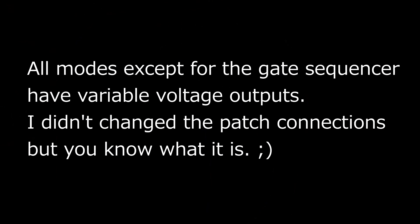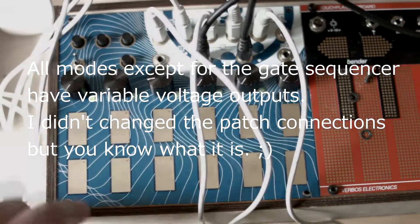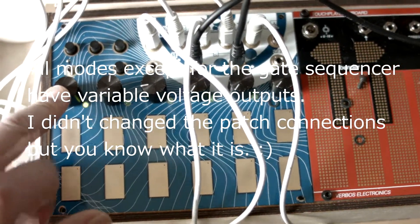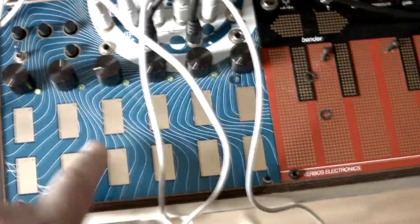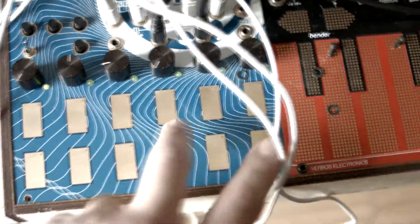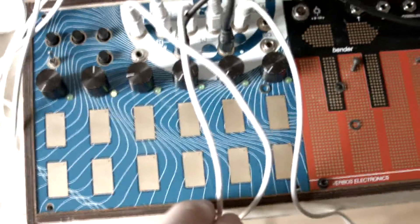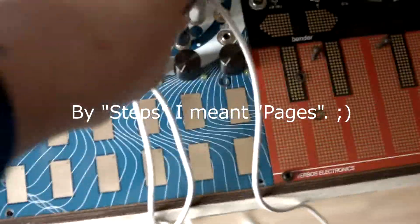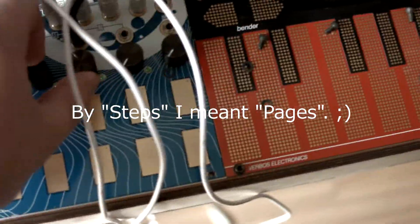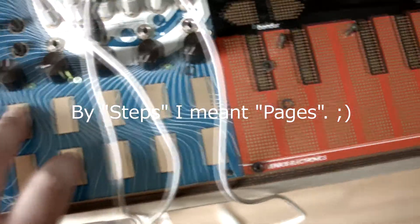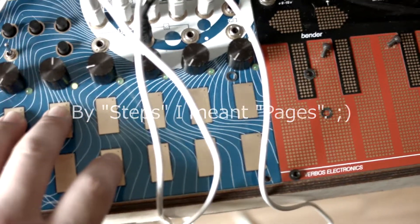So there are four different step sequencing modes in Mode 1. They are: the classic step sequencer, which runs between any two steps, and the second is ARP mode, which plays the steps as you press them.